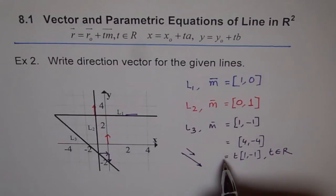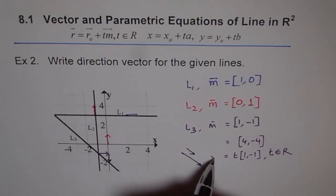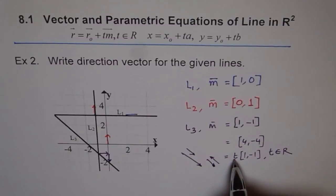And t could be negative. That's the beauty of this direction vector of a line. So these two lines, this line and this line are actually the same lines. t could be plus 2 or it could be minus 2. I can also write this as t times [-1, 1].